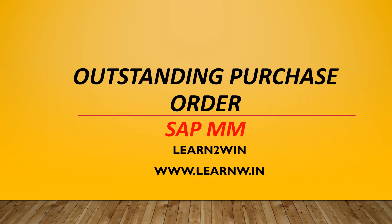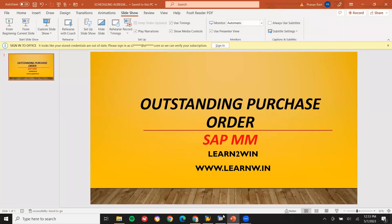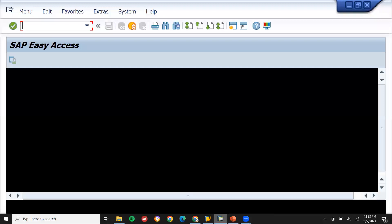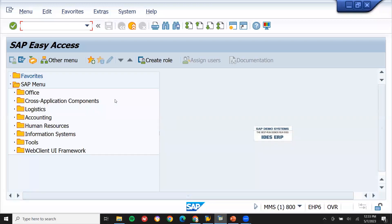Hello everybody. Today we are going to see outstanding purchase orders — that is, goods receipt not done with the purchase order, and vendor invoice not done. That is what we are going to see. We are going to see that in the SAP system. Let's go to the SAP system.